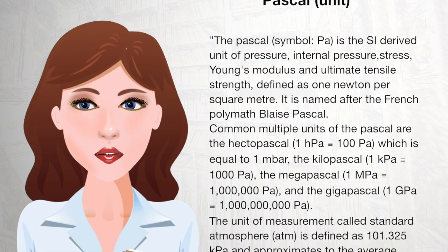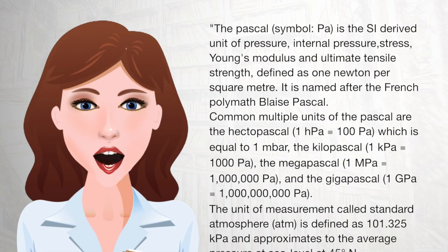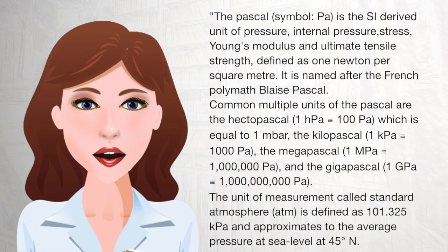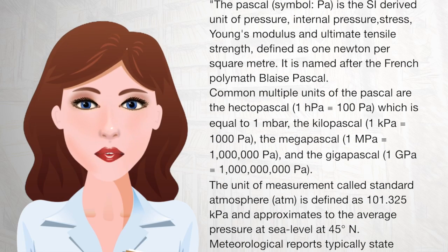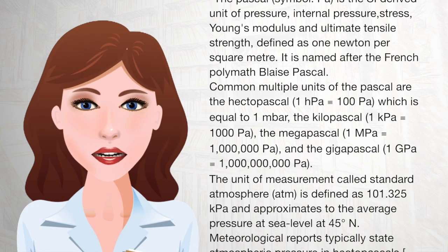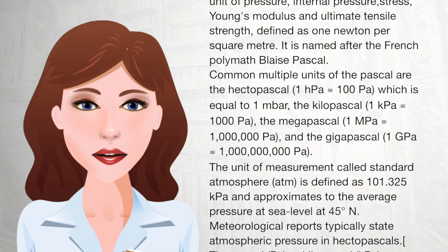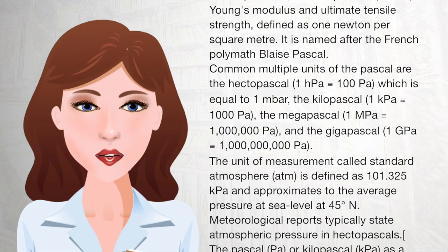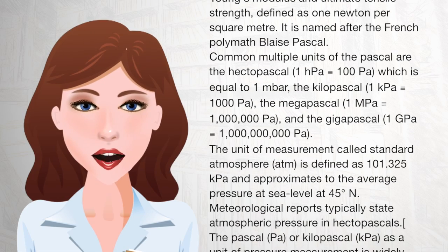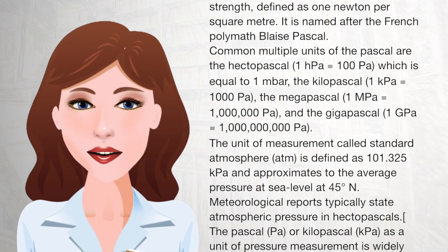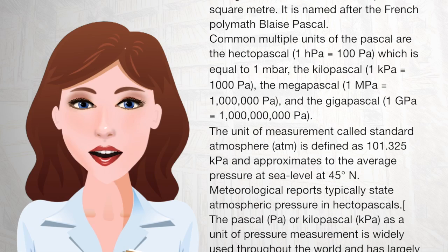Common multiple units of the Pascal are the hectopascal (1 hPa = 100 Pa), which is equal to 1 millibar; the kilopascal (1 kPa = 1,000 Pa); the megapascal (1 MPa = 1 million Pa); and the gigapascal (1 GPa = 1 billion Pa).